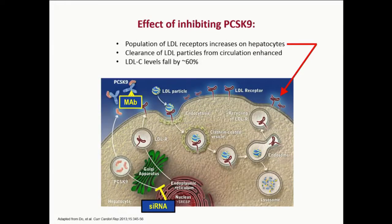PCSK9 reduces the clearance of LDL particles from the circulation and thereby raises LDL cholesterol levels. Conversely, if PCSK9 is inhibited — either with a monoclonal antibody shown in the upper left of the slide, or with a small interfering RNA shown at the bottom impairing PCSK9 synthesis in the hepatocyte — we increase the population of LDL receptors on the hepatocyte surface and increase LDL clearance. Typically, with this kind of inhibition, LDL cholesterol levels fall by about 60%.